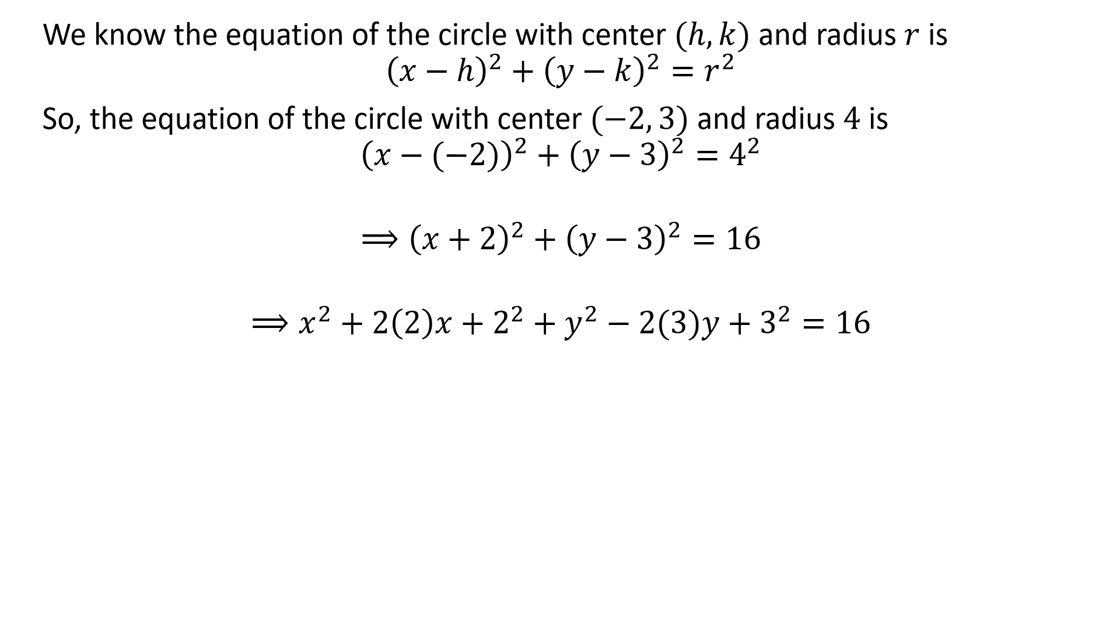Expansion of square terms gives us x² + 2(2)x + 2² + y² - 2(3)y + 3² = 16.